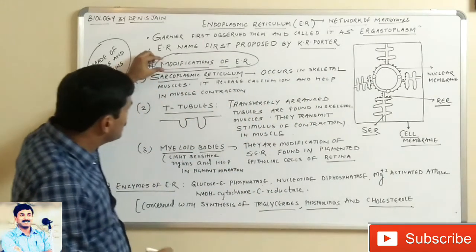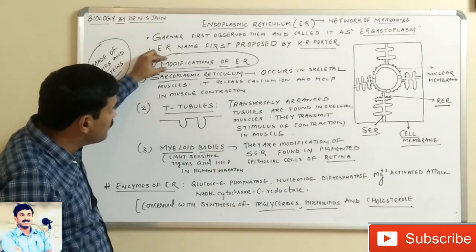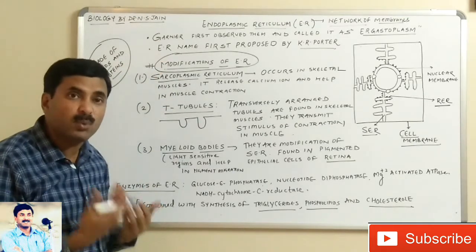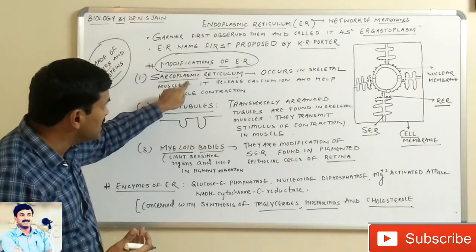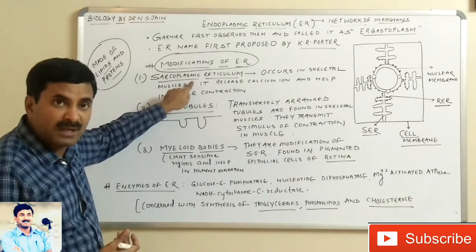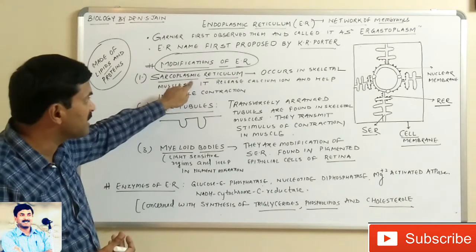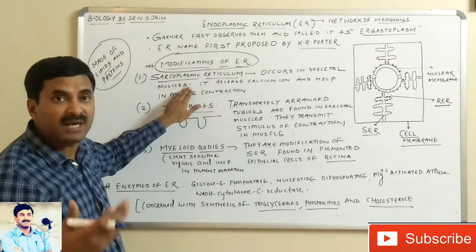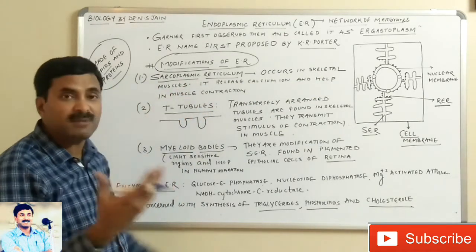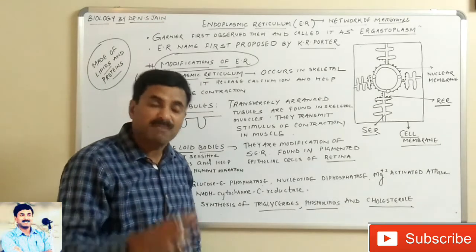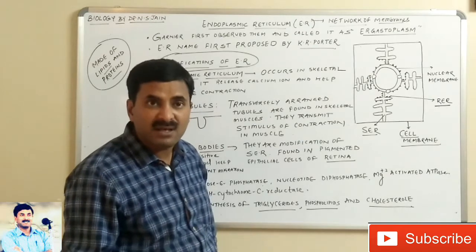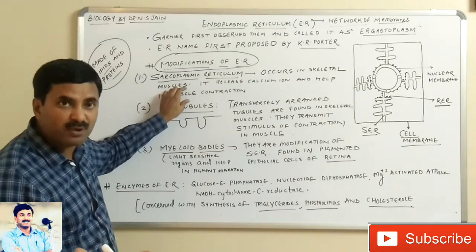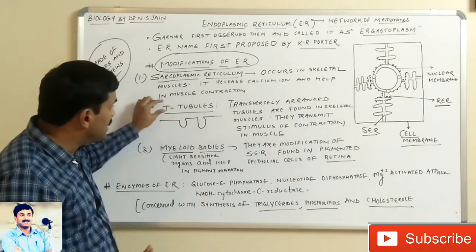The ER is modified in various ways for different functions. The first modification is the sarcoplasmic reticulum, which is a modification of the ER present in skeletal muscles, also called voluntary muscles. The role of the sarcoplasmic reticulum is to store calcium ions and release them for muscle contraction.